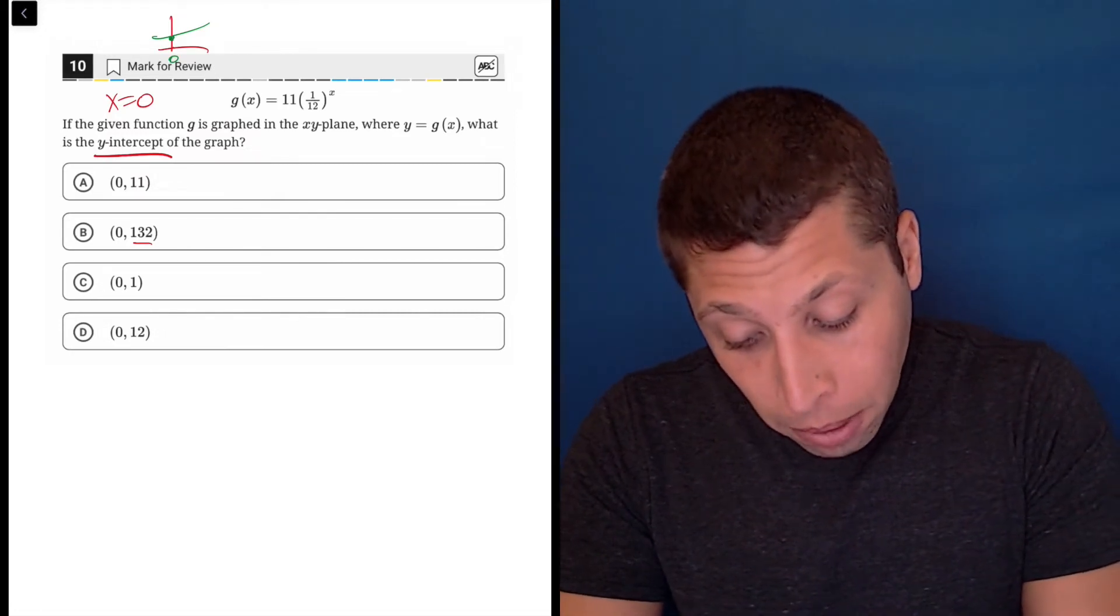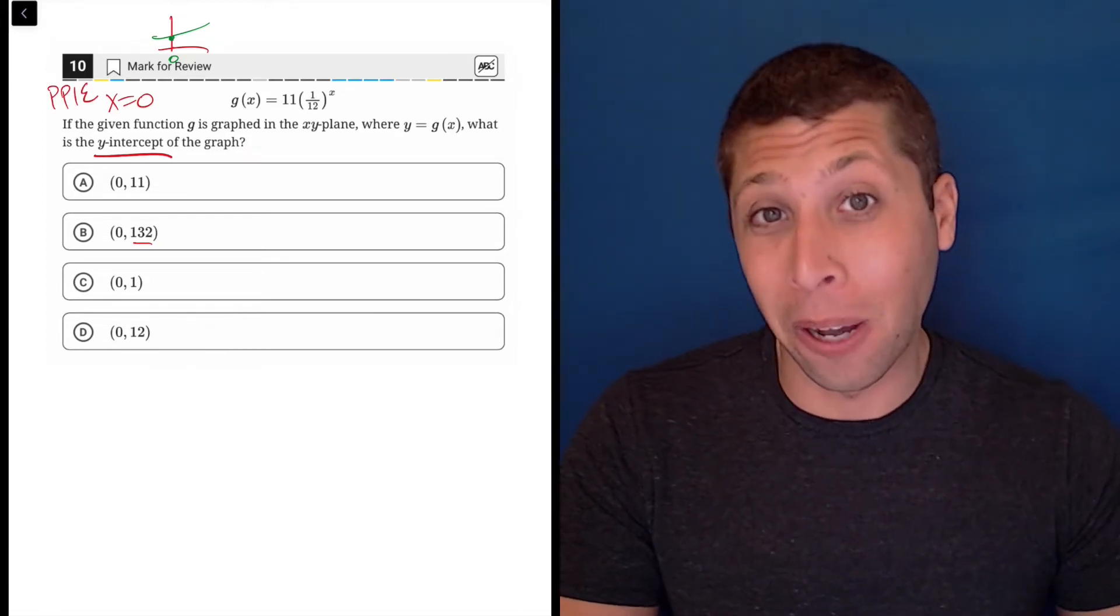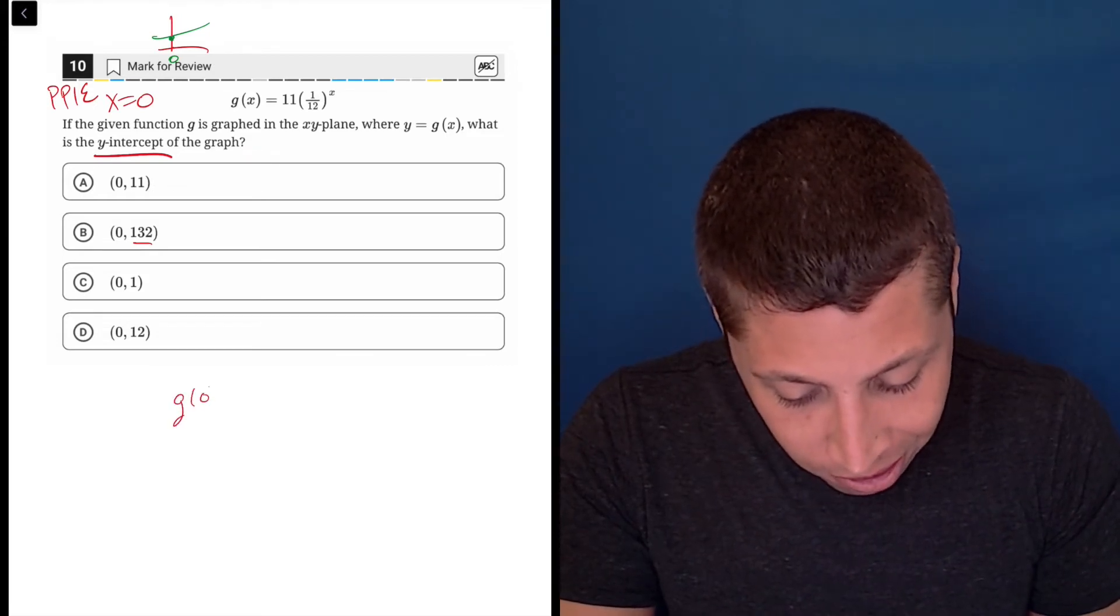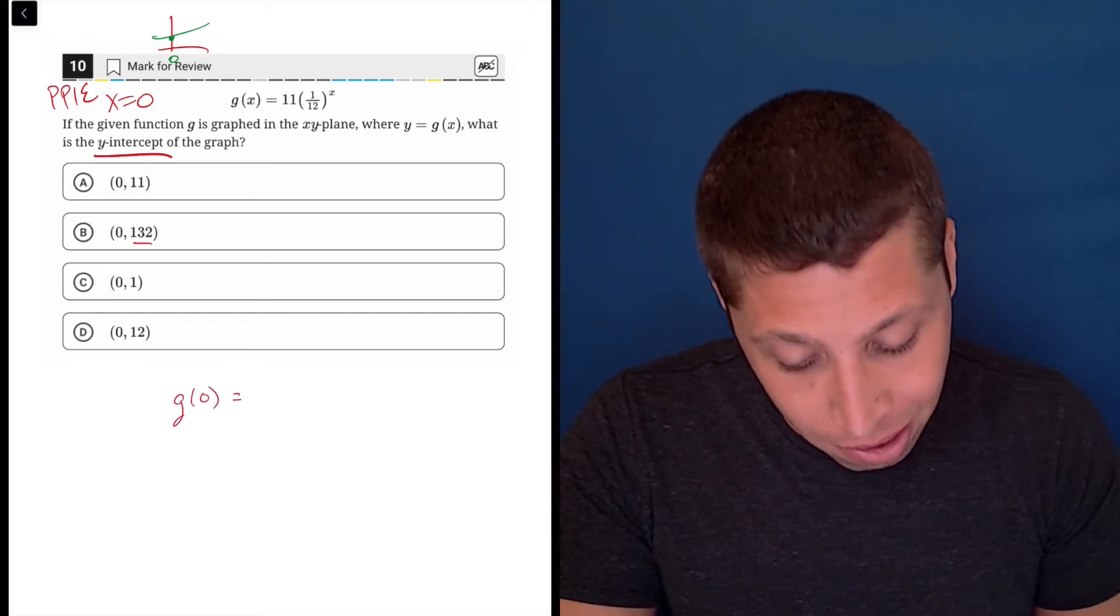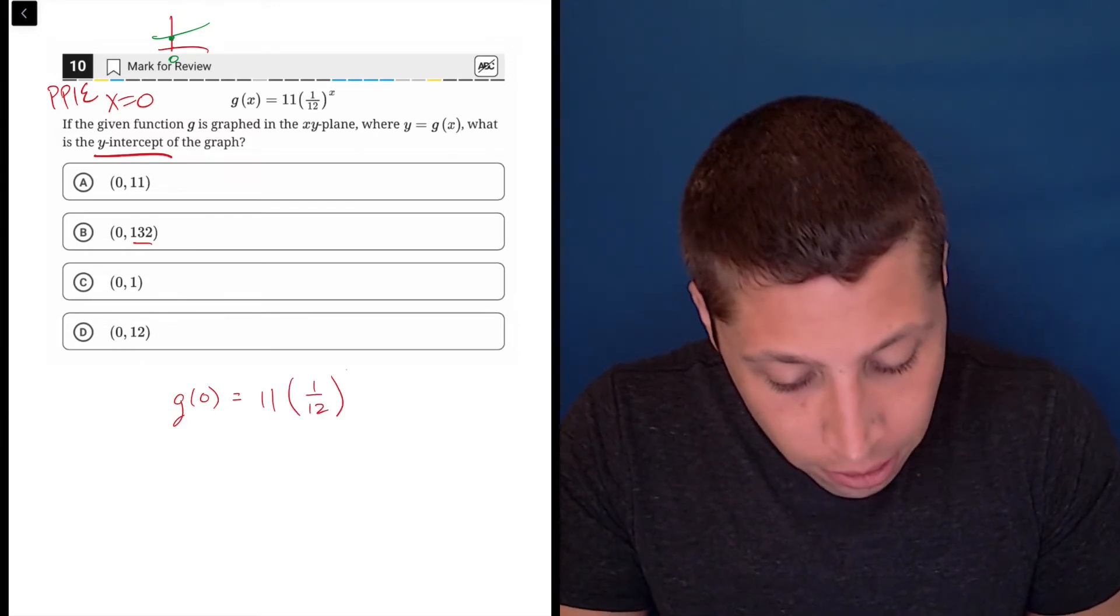All we have to do now is plug points into equations. We know half of a point—that's good enough. So where does it go? Just to stick to the function notation, g(0) is equal to 11 times (1/12) to the zero. Remember, g(0), that's not multiplication. That's just a way of noting that zero went in for x.